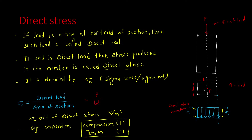So this is everything about direct stress. There are two important points to understand: first, direct stress is produced when the load acting is a direct load or concentric load, not an eccentric load; second, the variation is constant throughout the section, and the formula for direct stress is load divided by area of cross section.